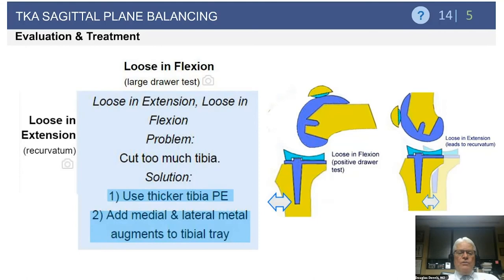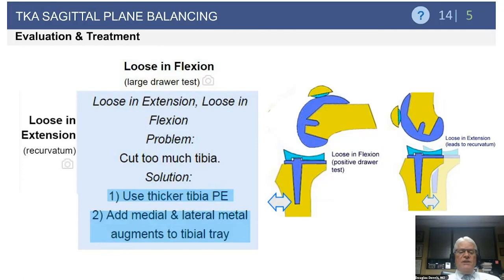Next: loose in extension and loose in flexion. The problem here is typically that you have over-resected the tibia. It can usually be solved by simply using a thicker tibial insert. However, in a revision scenario, if a patient is under 70 years of age and correcting the problem requires, say, a 22-millimeter thick insert, you don't have many thicker options left for the future. So sometimes I'll add 10-millimeter medial and lateral metal augments to the undersurface of the tibial tray, then take the insert thickness down to 12 millimeters, preserving future options should more instability occur.